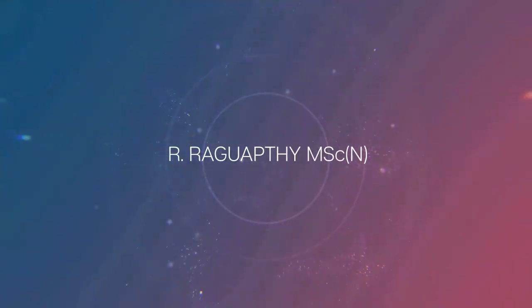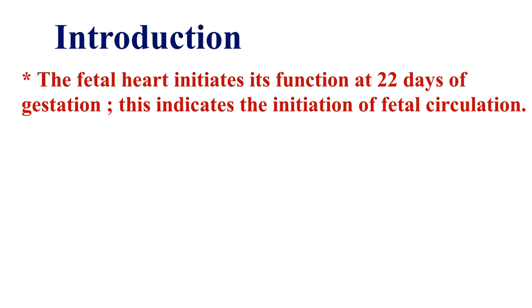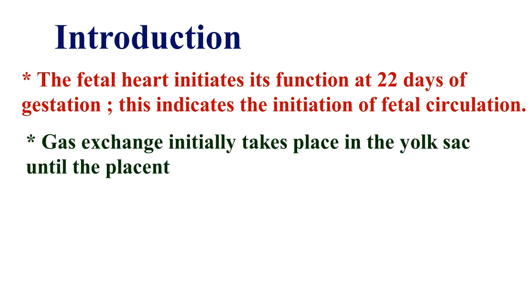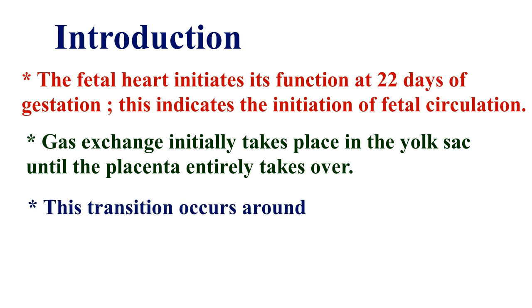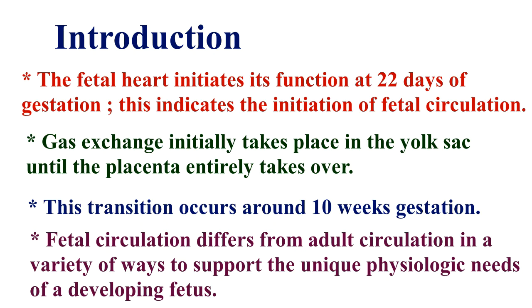Fetal circulation introduction. The fetal heart initiates at 22 days of gestation, indicating the initiation of fetal circulation. Gas exchange initially takes place in the yolk sac until the placenta entirely takes over, a transition that occurs around 10 weeks gestation. Fetal circulation differs from adult circulation in a variety of ways to support the unique physiologic needs of a developing fetus.